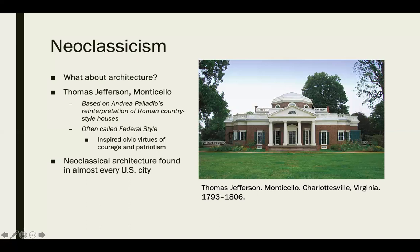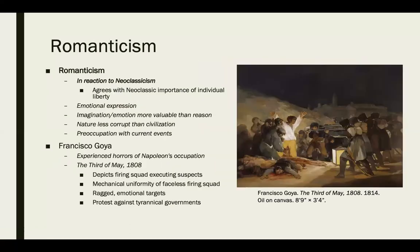Neoclassical architecture found its way into almost every U.S. city. Even locally, in places like Charlotte, you might see buildings made in this style from the late 1700s to early 1800s. When you see buildings done in this style, it typically means they're coming from that time period.